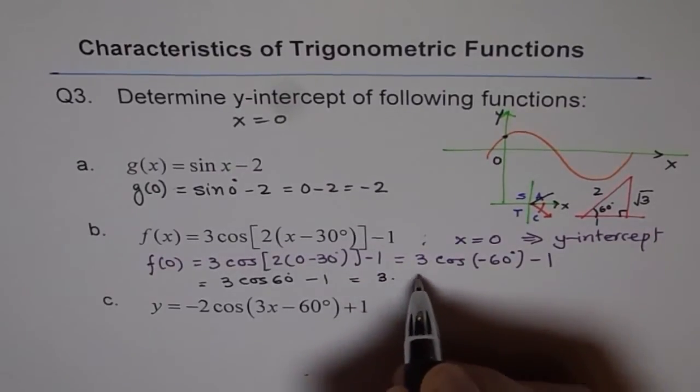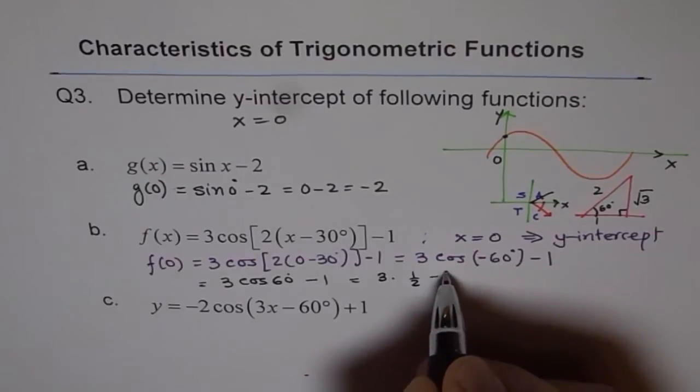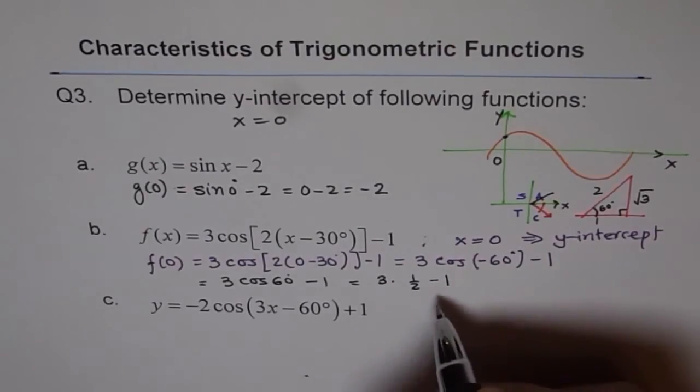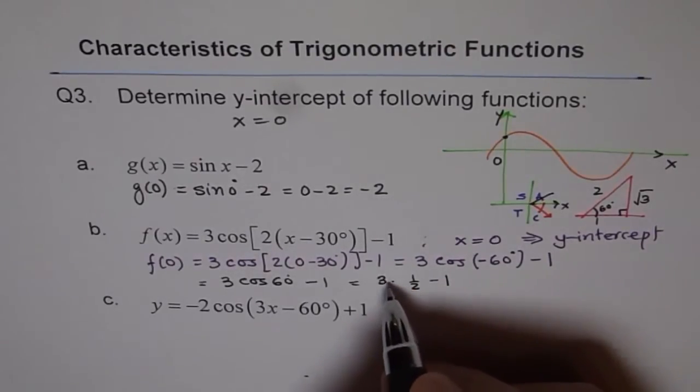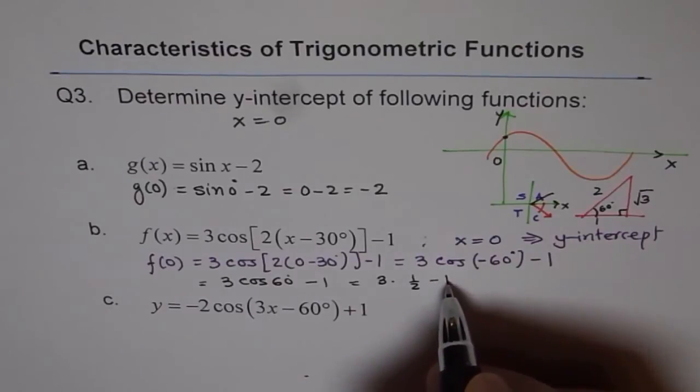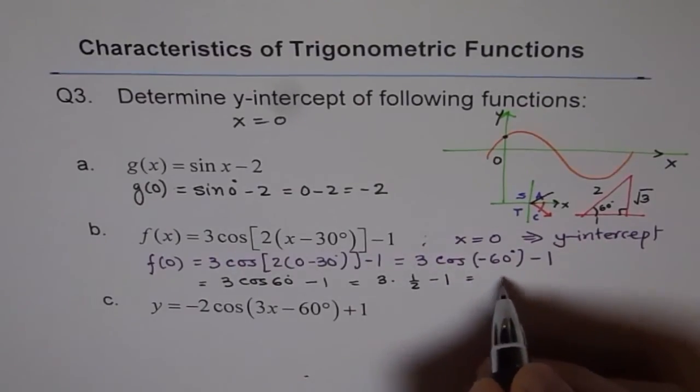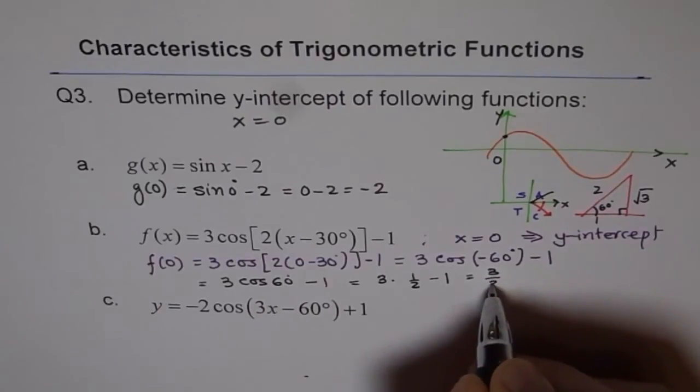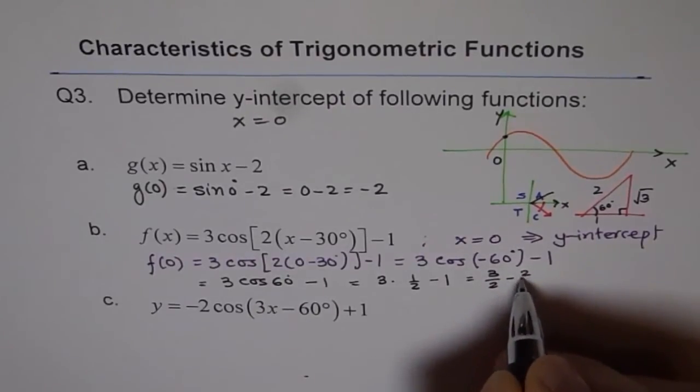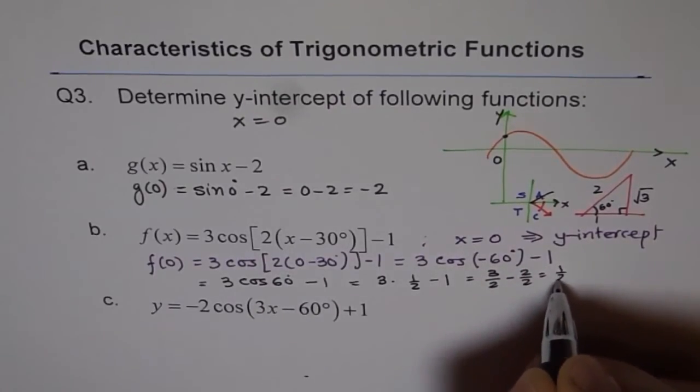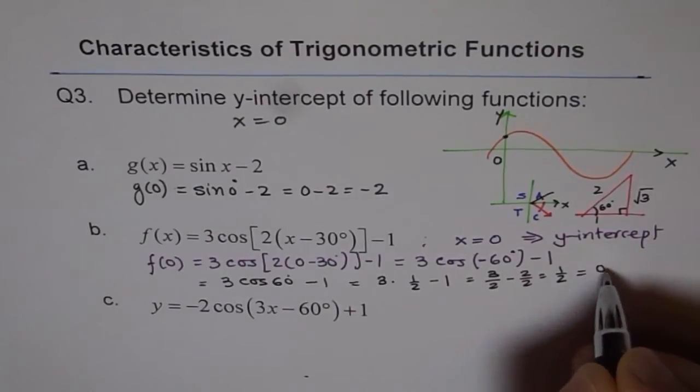So we can write 3 times half minus 1. 3 times half is 1.5. And 1.5 minus 1 is 0.5. Or you can write this as 3 over 2 minus 2 over 2, which is half. Or same as 0.5.